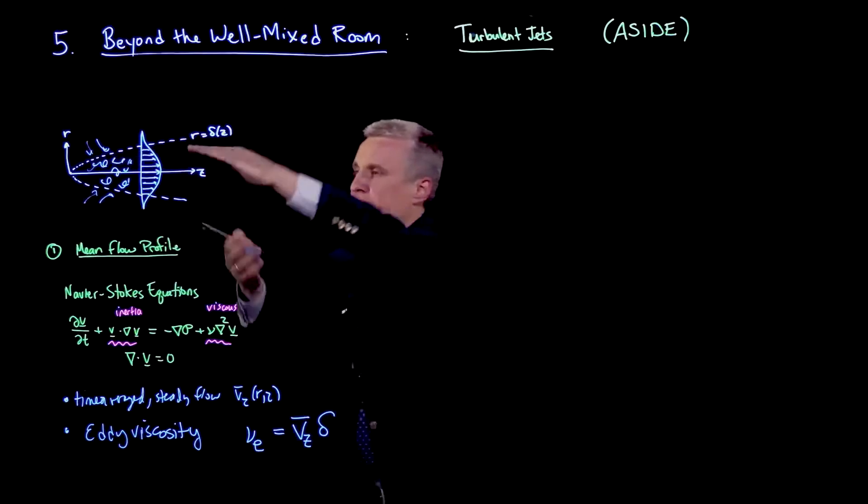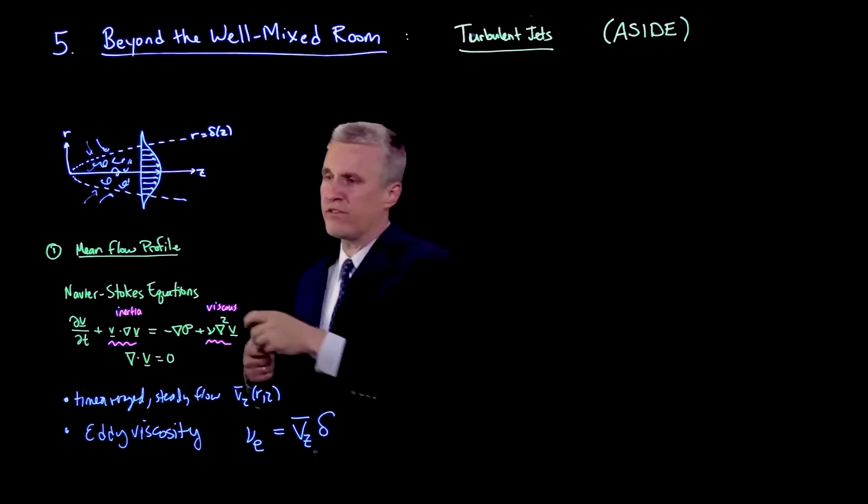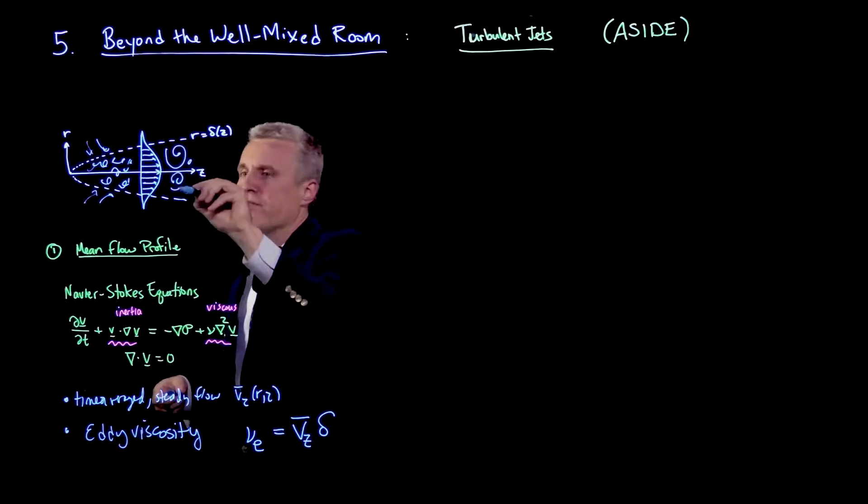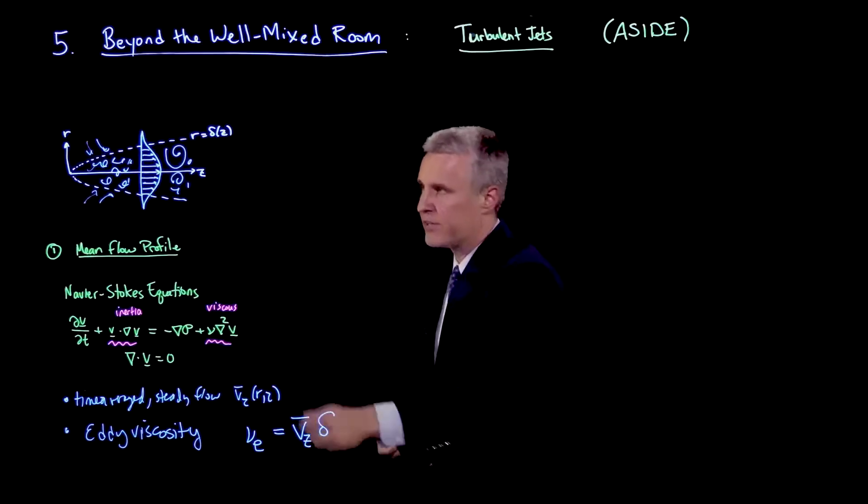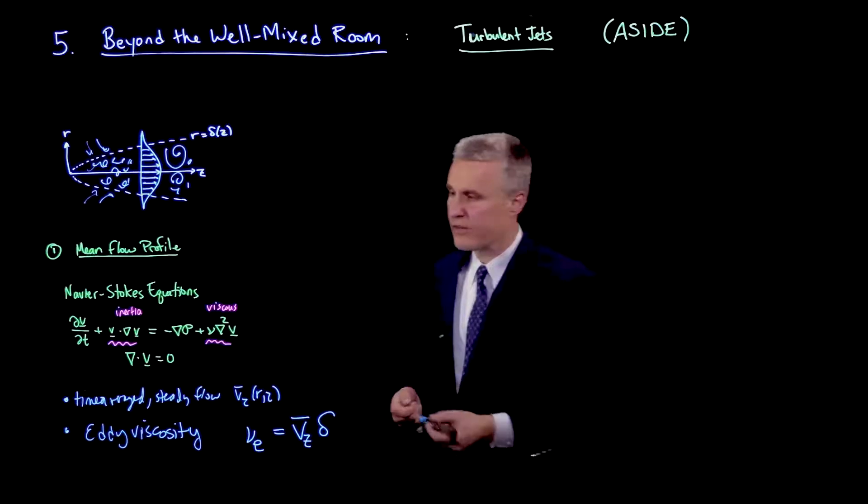Then there's all kinds of eddies, but the largest eddy is kind of at that scale. And so if I write down an eddy viscosity, it's going to be the sort of average velocity there times that scale. OK, so that's going to be the eddy viscosity.